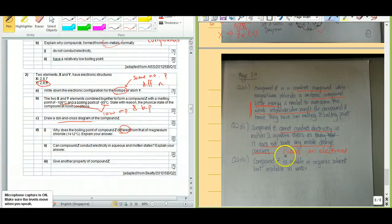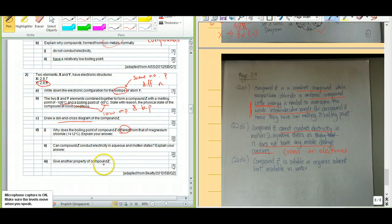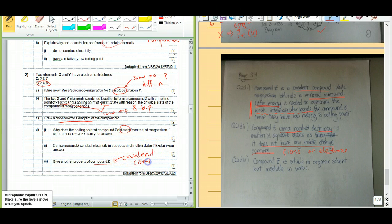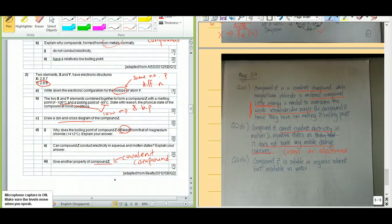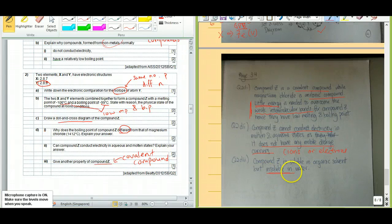Now compound Z is asking you to give another property of compound Z. In this case here, we need to find out what's another property of a covalent compound. In actual fact, you learn three different physical properties, or I should say, three different properties of a covalent compound. First up, we talk about the conduction of electricity, electrical conductivity of covalent compounds. We talk about the melting and boiling point of your covalent compounds. And lastly, we talk about solubility in water. So actually, compound Z is insoluble in water.